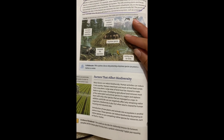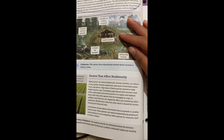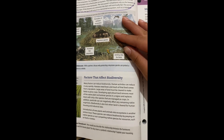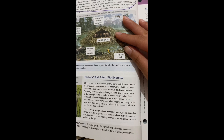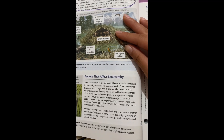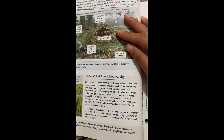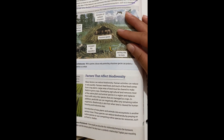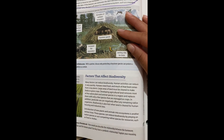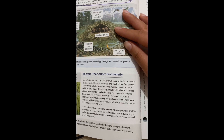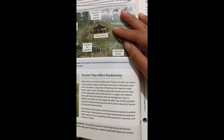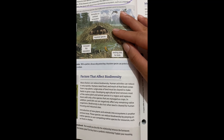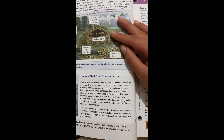Factors that affect biodiversity. Many factors can reduce biodiversity. Human activities can reduce it very quickly. Humans need food, and much of that food comes from crop plants. Large areas of land must be cleared to make fields to grow crops. Developing agricultural land removes most of the native plant and animal species in a region and replaces them with few species that are managed as crops. In addition, pesticide use can negatively affect the remaining native organisms.